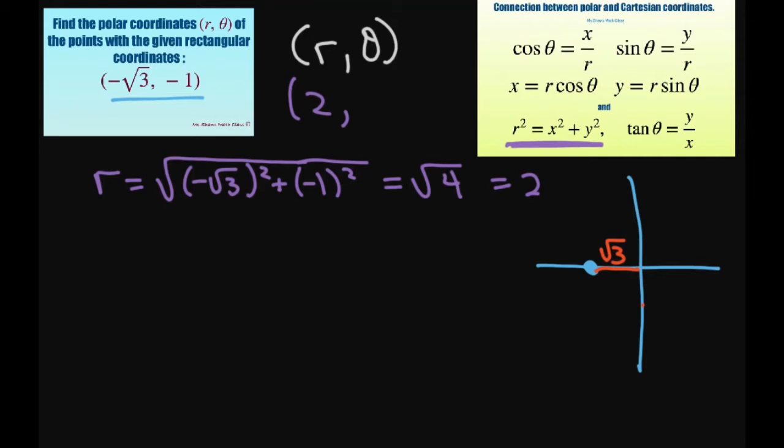And then we have negative 1, I'll put it here. So there's your little triangle there. We're trying to find this angle here, and this length is 1 and the radius is 2.